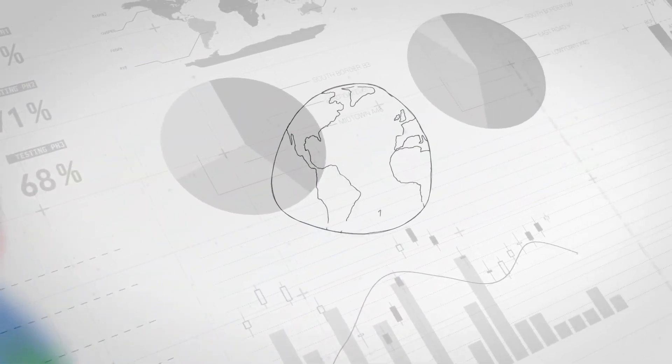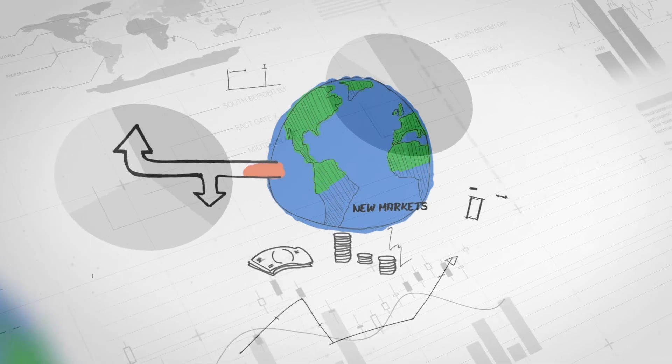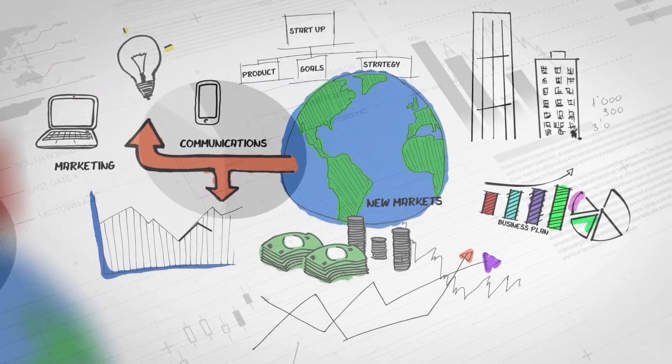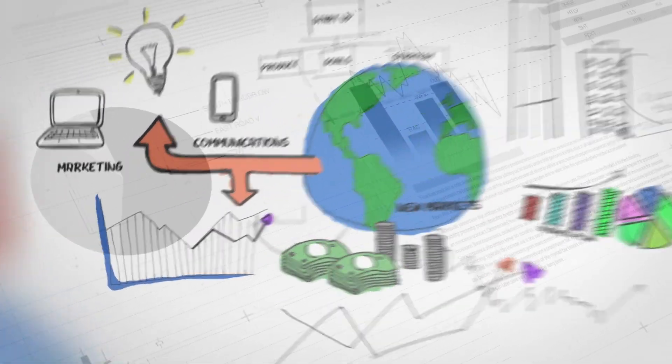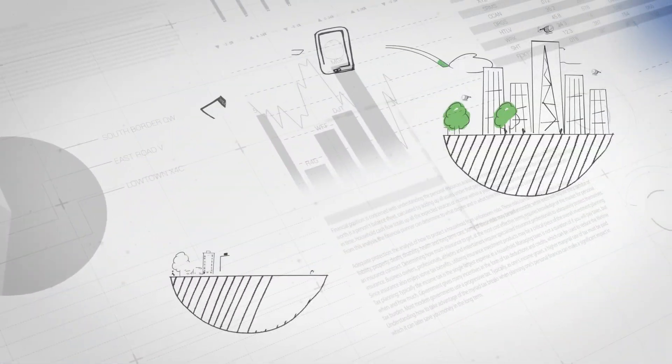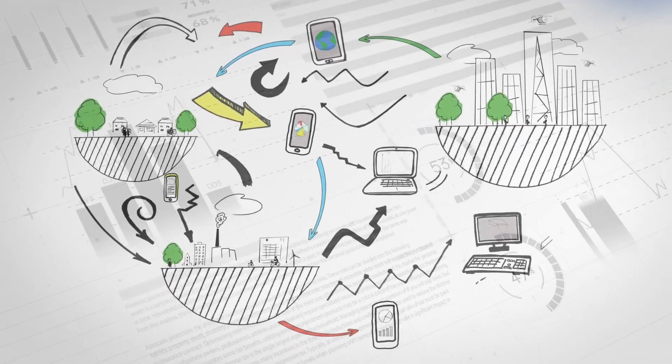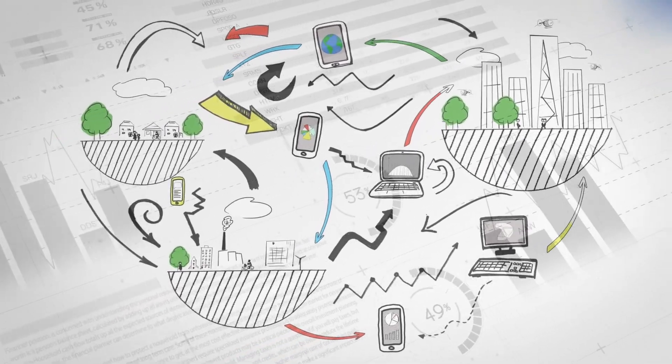Once you've decided on a method of data collection — the leaves — it's very simple to work your way back through the roots to establish the methodology, epistemology, and ontology which underpin it.